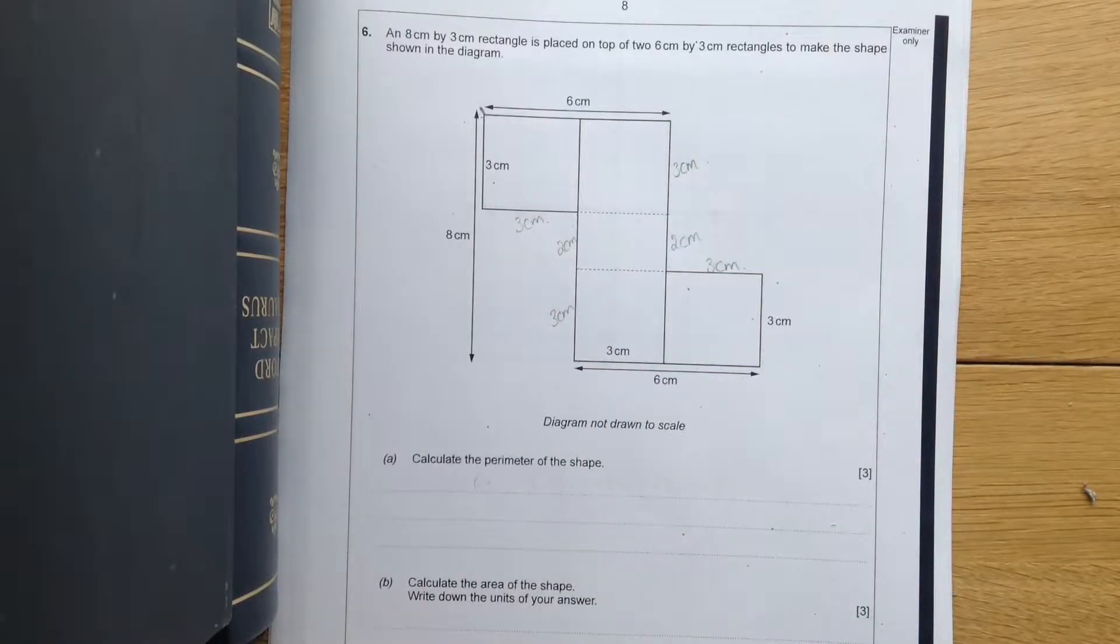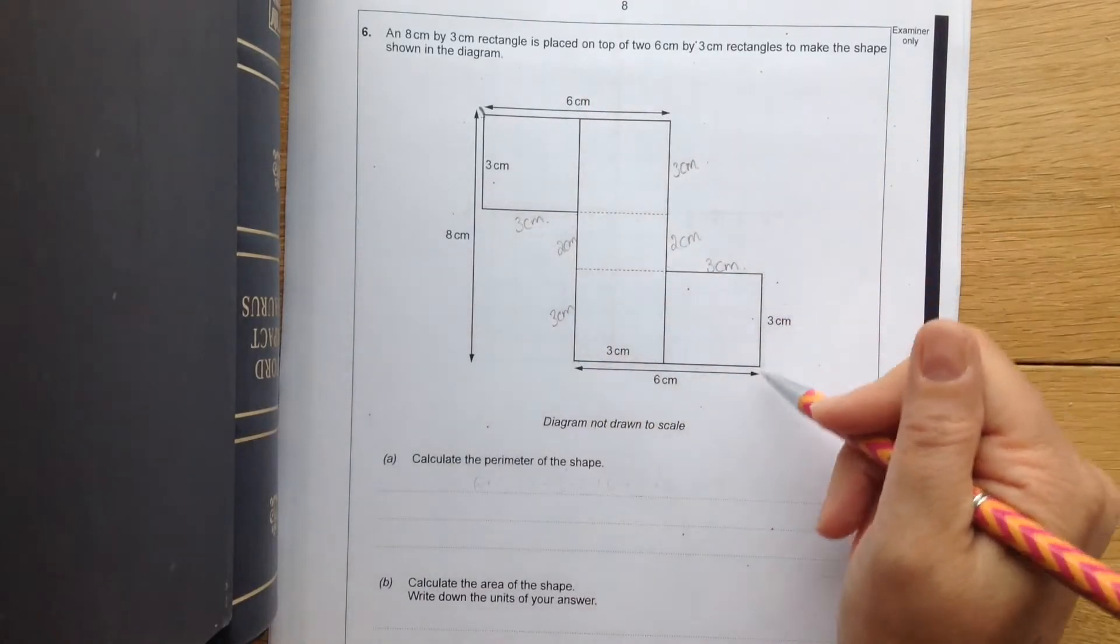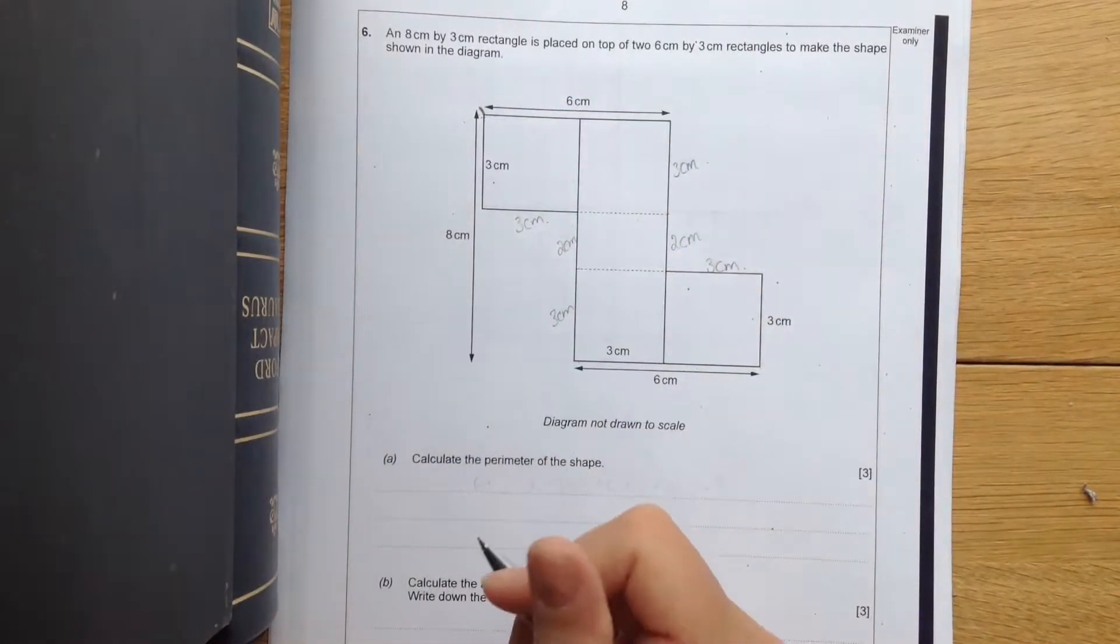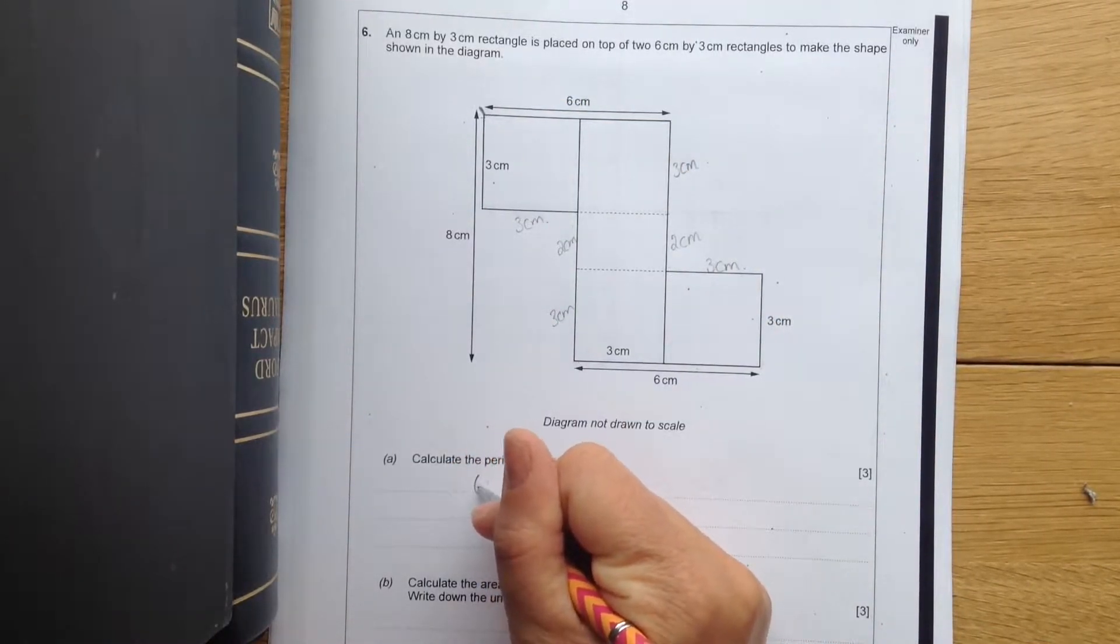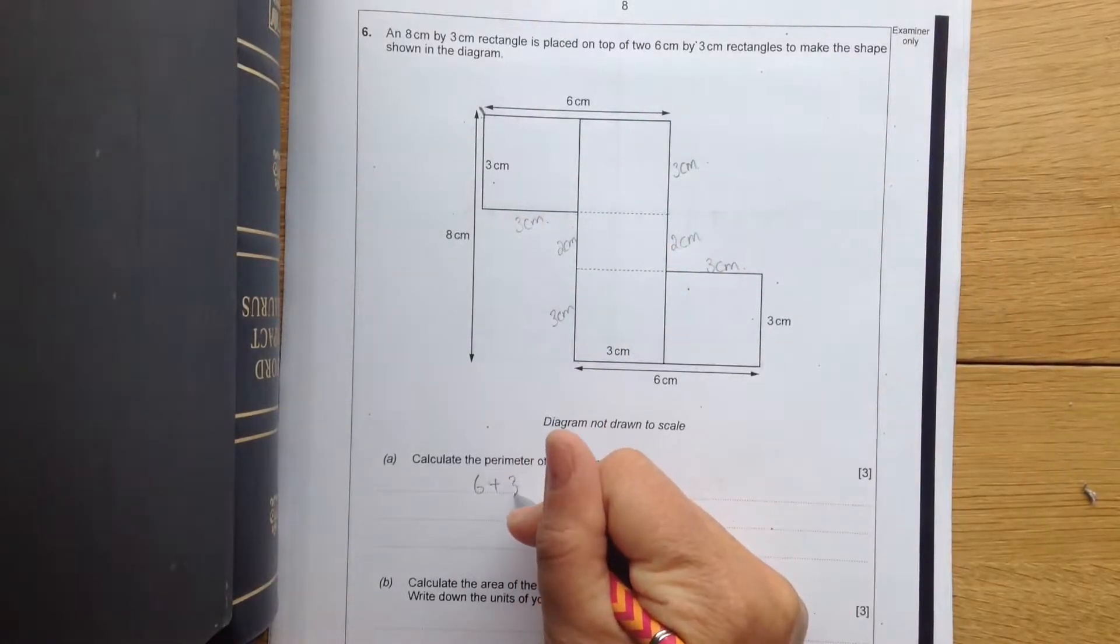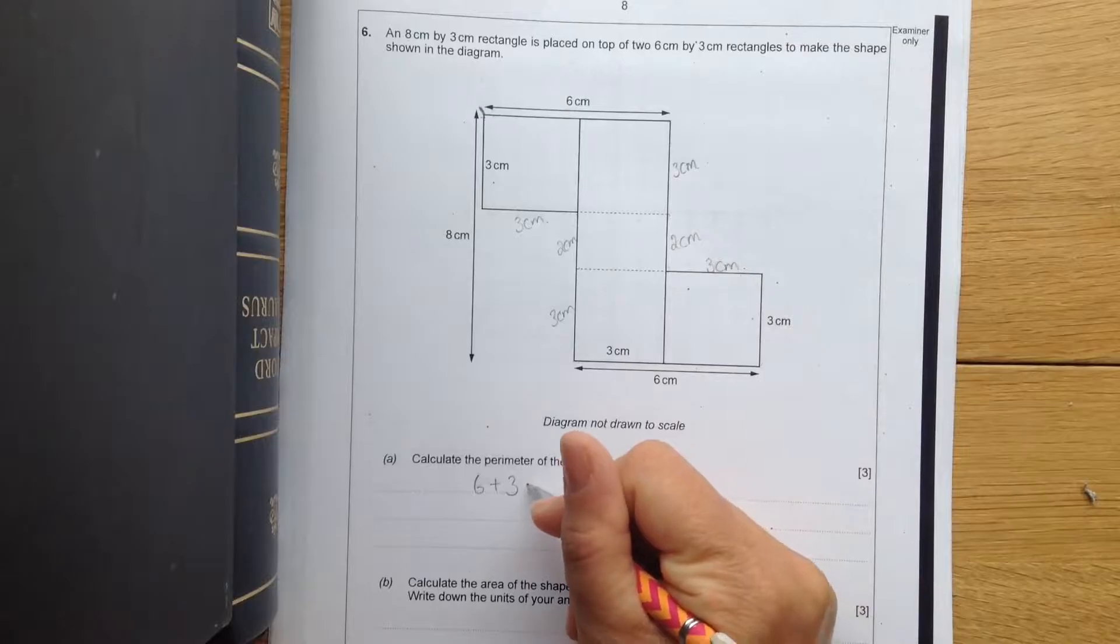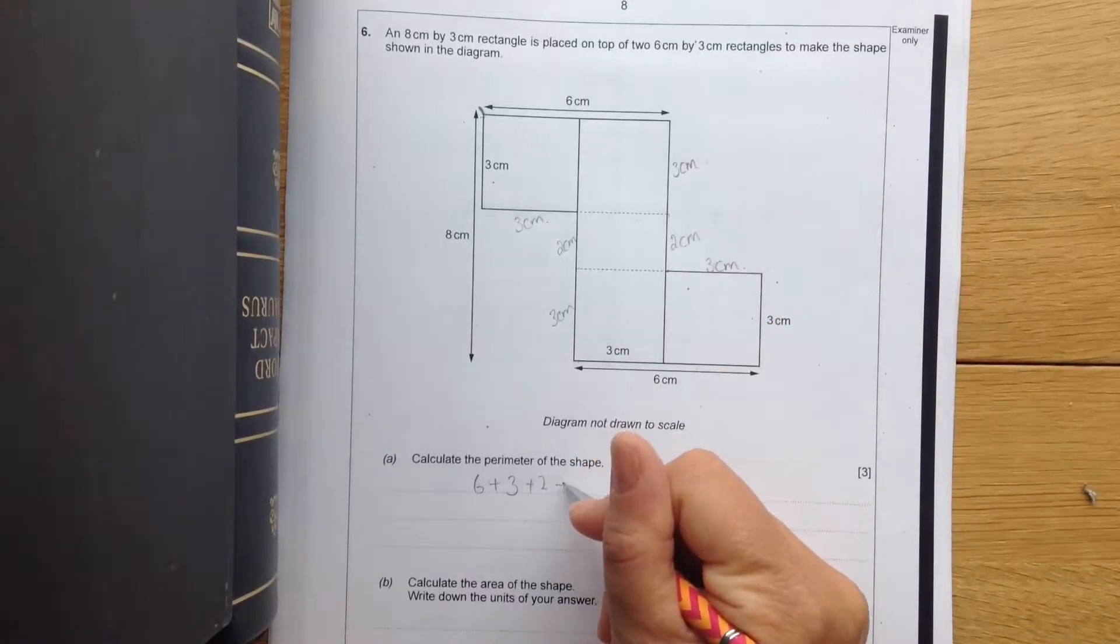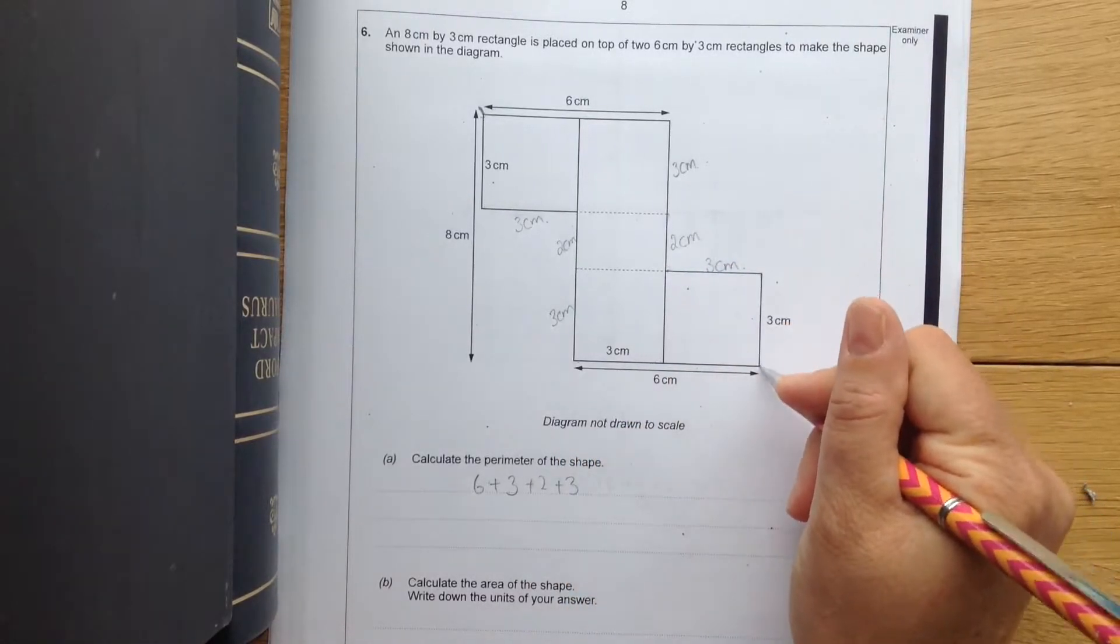To calculate the perimeter then, I'm going to start from this corner. I always start from that corner. And I'm going to go around in a clockwise direction to make sure I don't miss anything. So 6, plus 3, plus 2, plus 3, plus 3,